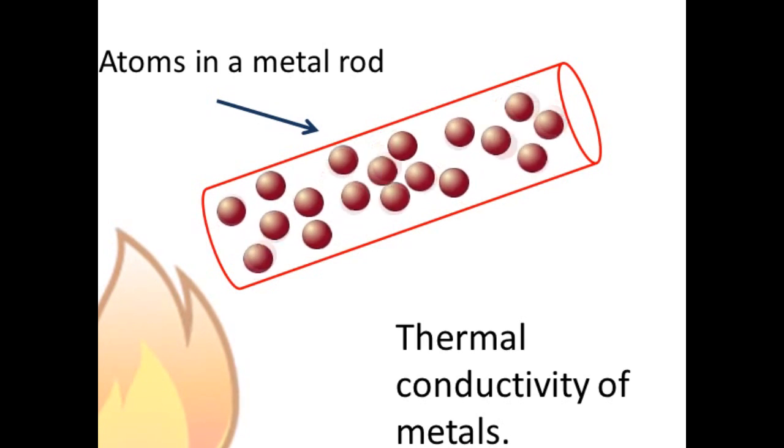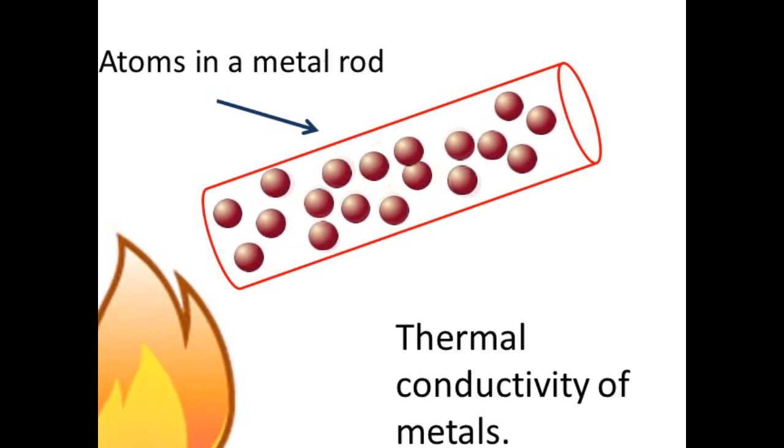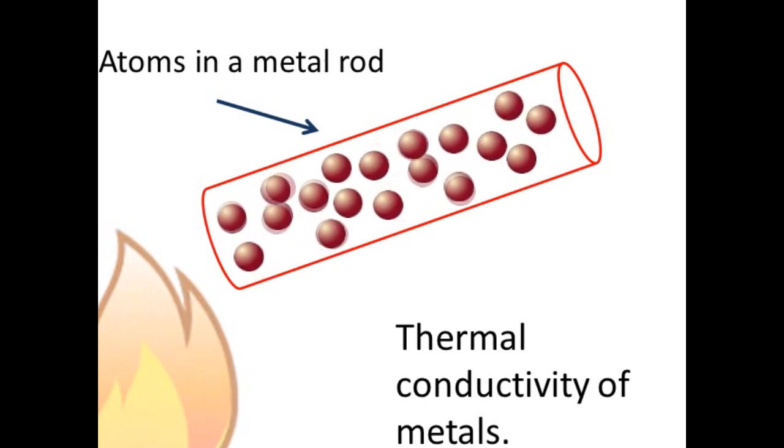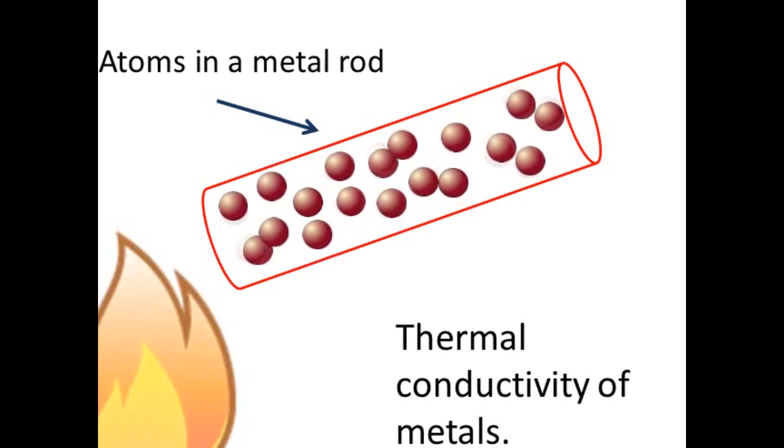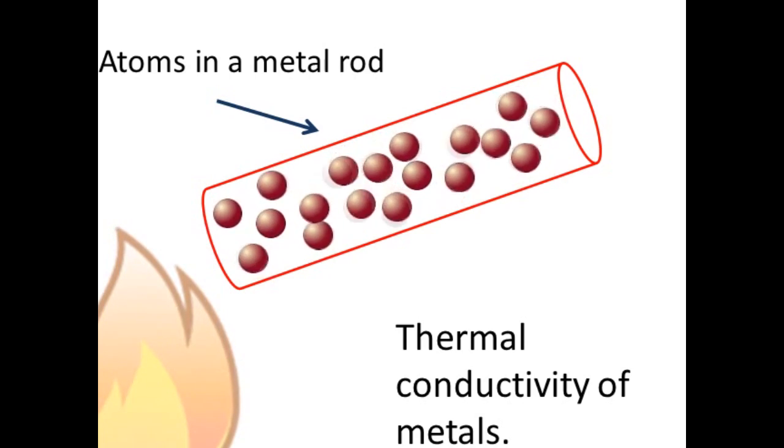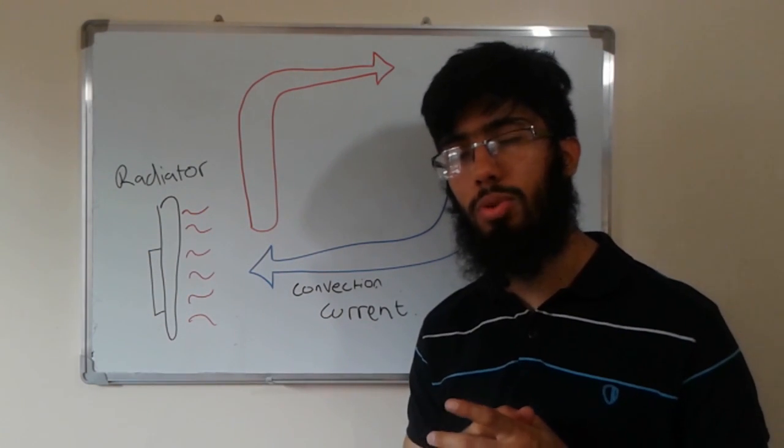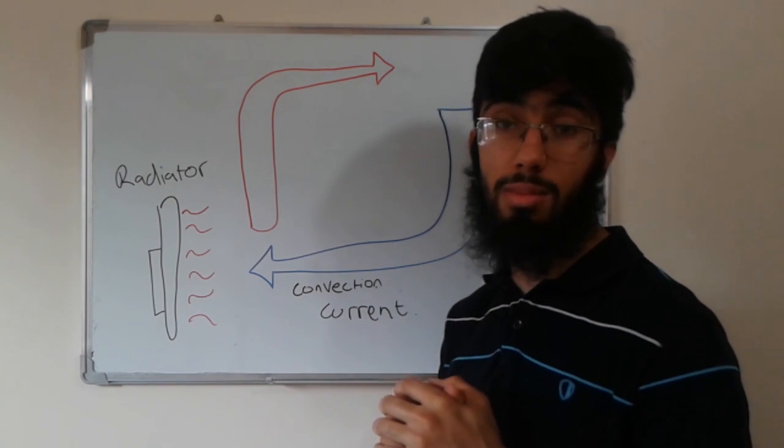This works particularly well with the metals within the radiator as there are a sea of free electrons which can also move around. This can be seen in a radiator when you physically touch it. Your hand will get warm and this is conduction. The main way that the heat is transferred throughout the room is again the absorption of photons by surrounding atoms.